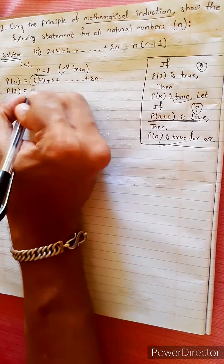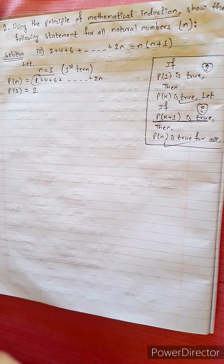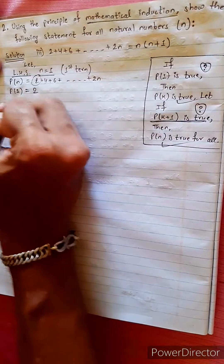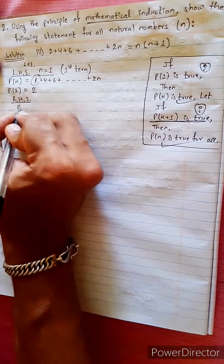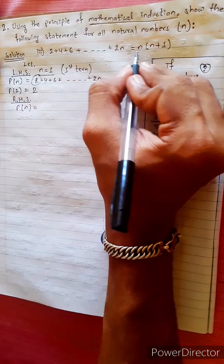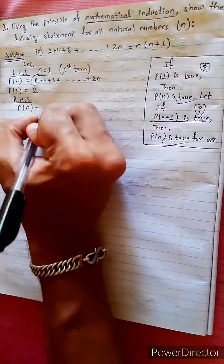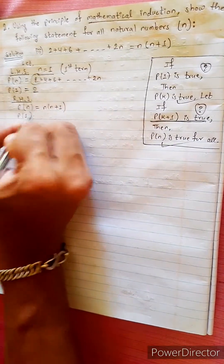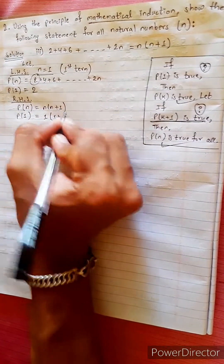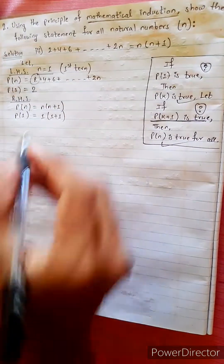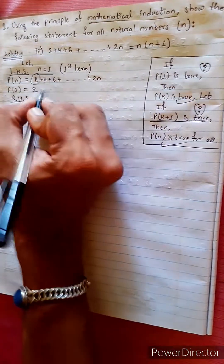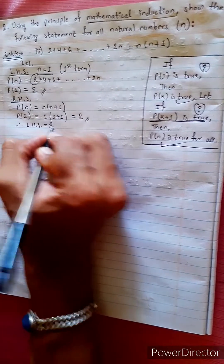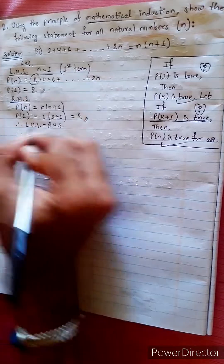The first term is 2. We solve LHS and RHS. The Pn value: RHS is n(n+1). For P1, n equals 1: LHS is 2, RHS is 1 plus 1 times 1 plus 1 equals 2. LHS equals RHS, therefore P1 is true.